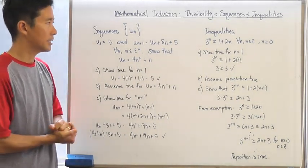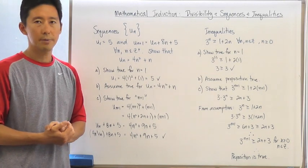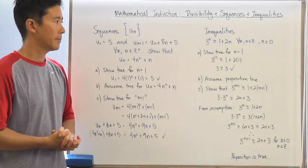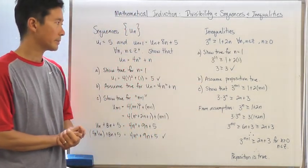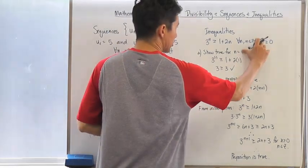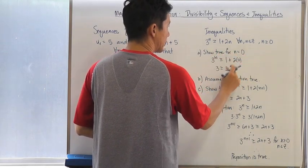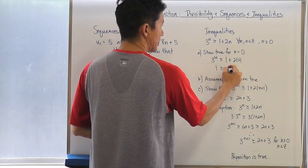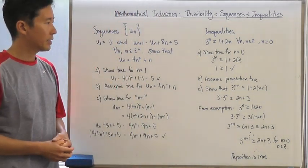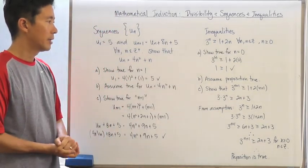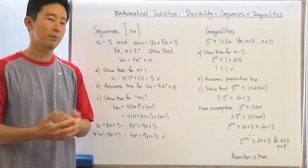Now, when it comes to inequalities, let's take a look at this one: 3 to the n is greater than or equal to 1 plus 2n, for all integers n greater than or equal to 0. Let's show this is true for n equals 0. We get 1 is greater than or equal to 1, which is true. Then we assume the proposition is true and show that 3 to the n+1 is greater than or equal to 1 plus 2(n+1).